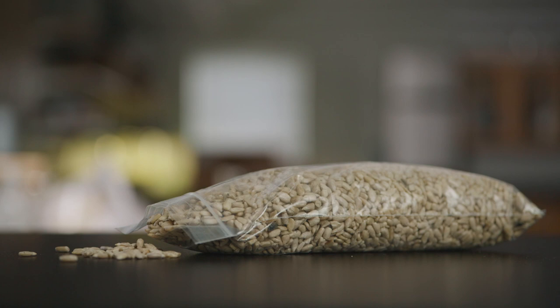In nature, milkweed bugs feed primarily on milkweed seeds, but these cultures have been bred to feed on raw, cracked sunflower seeds and will take several generations to adapt and thrive eating a different food.